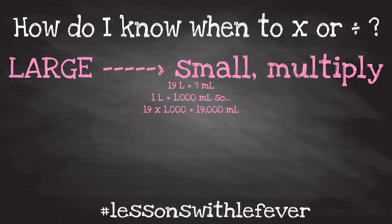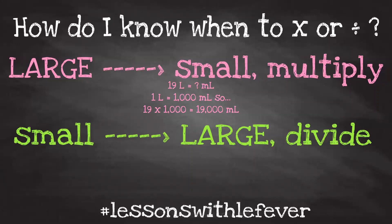Now any time I go from a smaller unit to a larger unit, I should divide. If I have 60,000 milliliters and I wanted to convert it into liters, I would first need to know that a milliliter is smaller than a liter, which tells me to divide. Then I would need to know that 1,000 milliliters equals one liter. So 60,000 divided by 1,000 equals 60 liters.